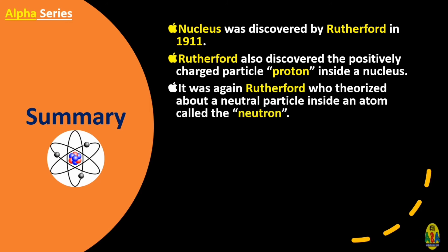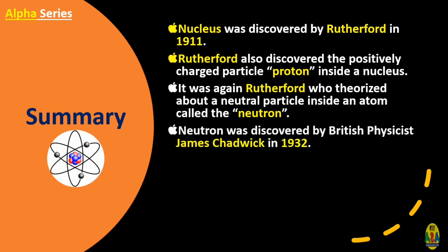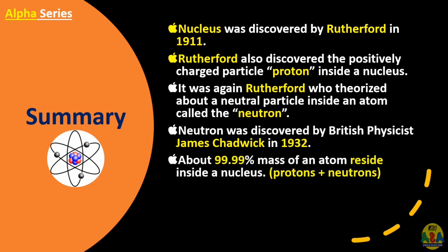Neutron was discovered by British physicist James Chadwick in 1932. About 99.99 percent mass of an atom resides inside a nucleus in the form of the mass of protons and neutrons.